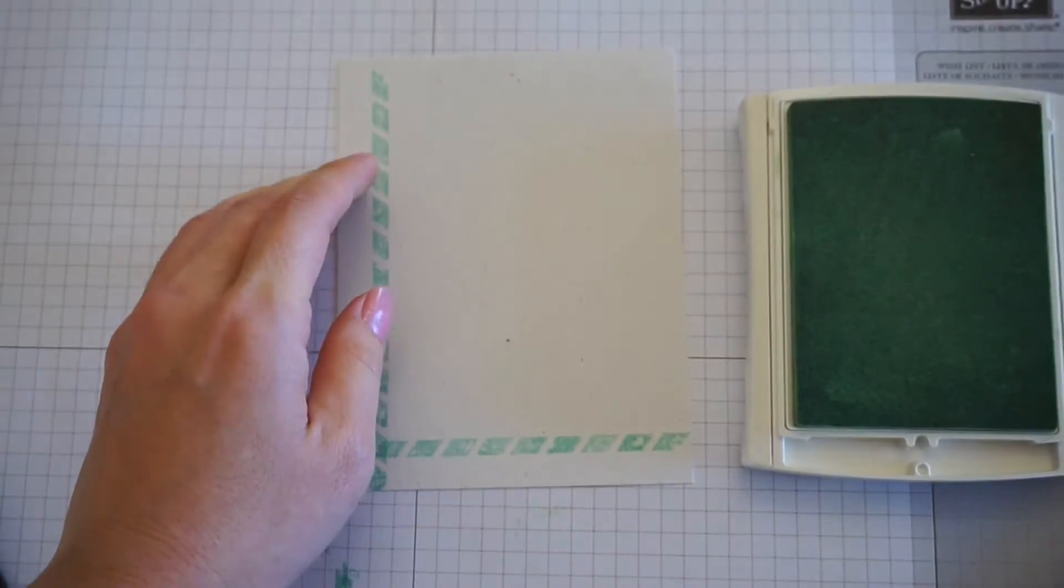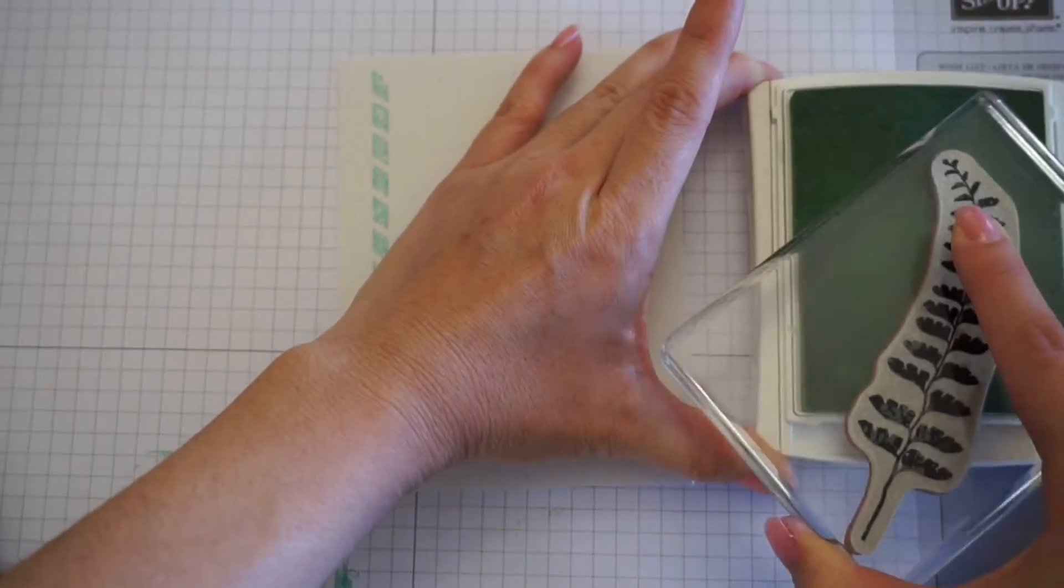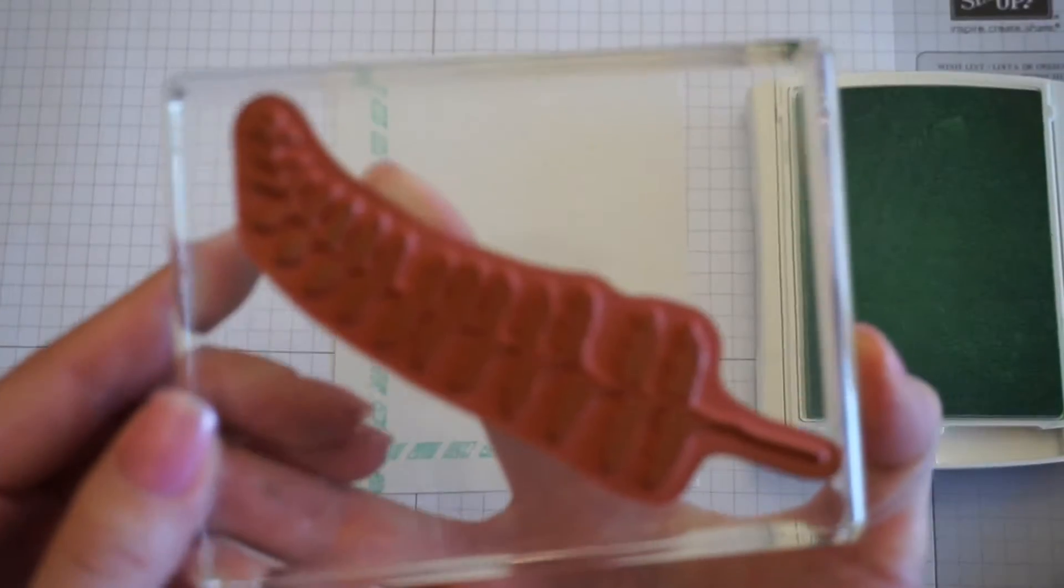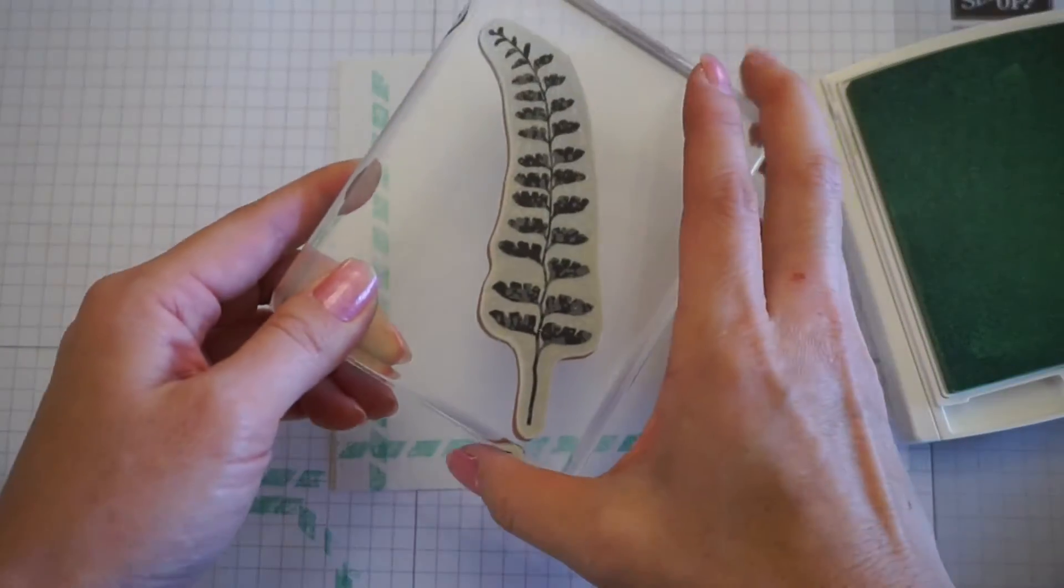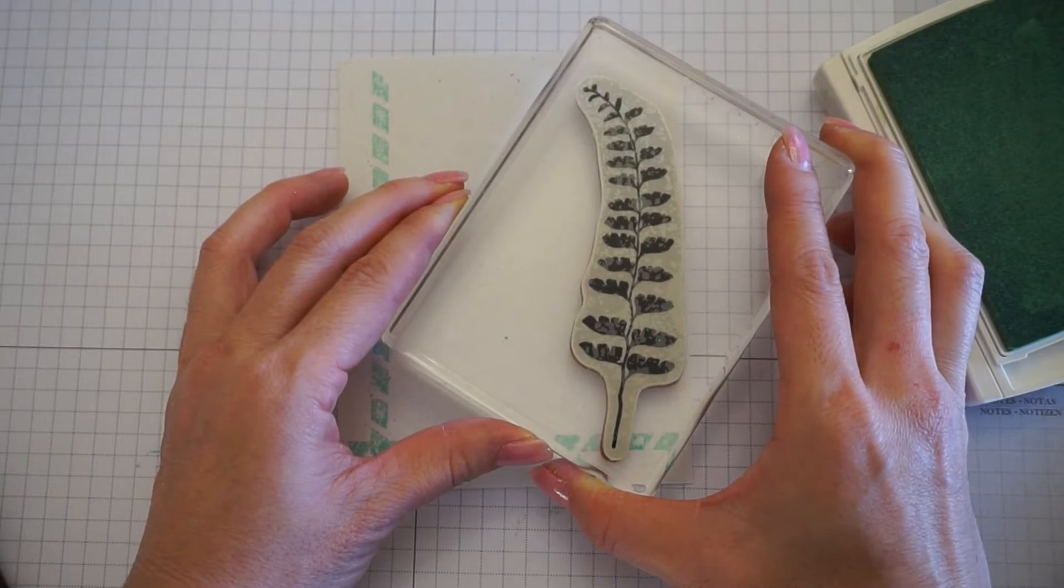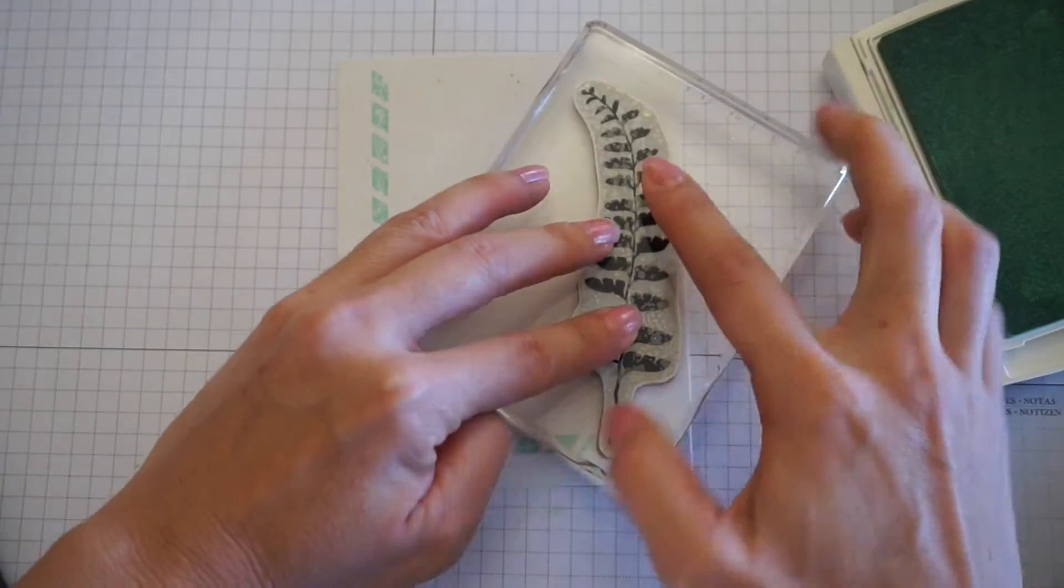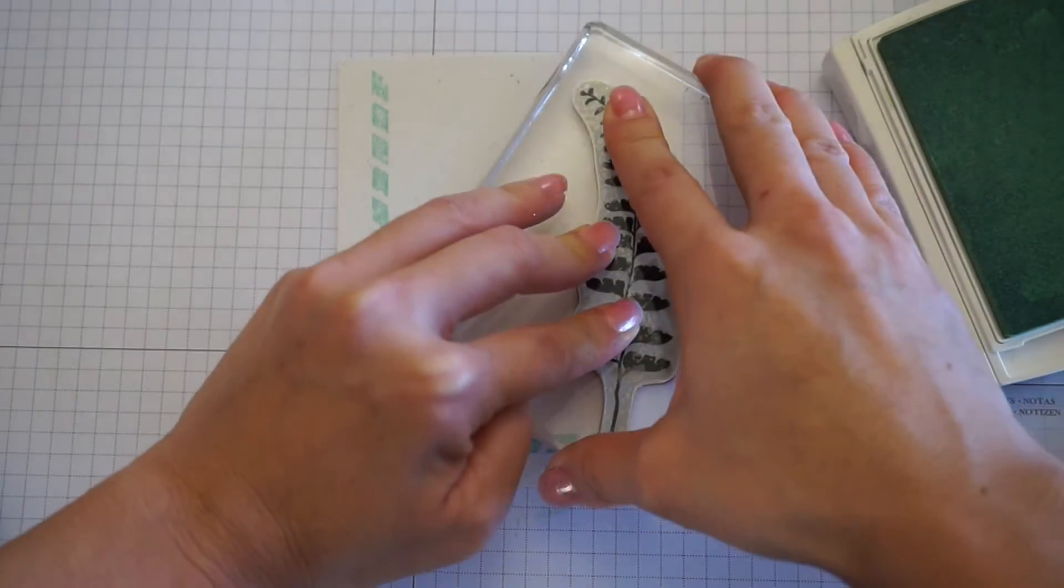We'll be using pistachio pudding and the leaf stamp. You want to stamp this toward the right side of your cardstock. I lined up the edge, the bottom of the stem, with the border.